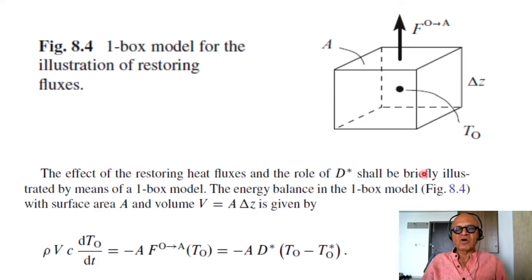Energy balance in the one box model with surface area A and volume A times delta Z is given by the rate of change of heat. So rho times volume times heat capacity of the water fluid times dT ocean dt equal to minus A and the flux of the ocean to atmosphere at temperature T_O, which we wrote as minus A D star times T_O minus T_O star.